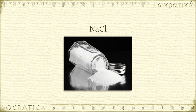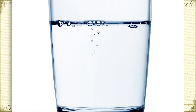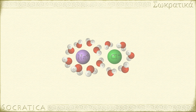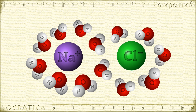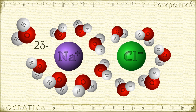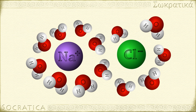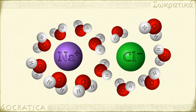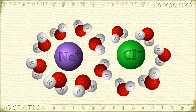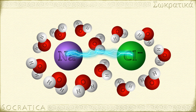Ionic bonds, like those in NaCl, are often easily disrupted in water. The ions separate and are surrounded by water molecules. We call this a solvation shell, or hydration shell. Notice that the water molecules are arranged so the partial negative oxygens in water are oriented towards the positive sodium ions, and the partial positive hydrogens in water are pointed towards negative chloride ions. Because the ions can move freely when dissolved in water, aqueous solutions of ionic compounds can conduct electricity.